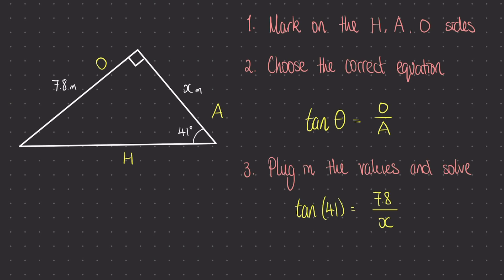To solve this, we would first need to times both sides of the equation by x, and finally we would have to divide both sides by tan of 41. Finally we can solve the right hand side of this equation by placing it into the calculator, in which we find that x is equal to 8.97.